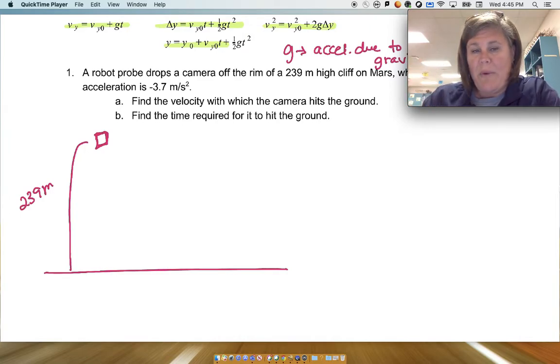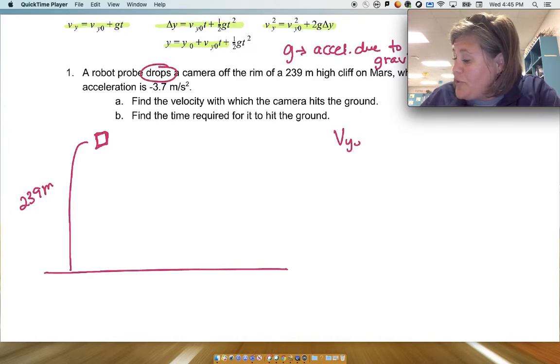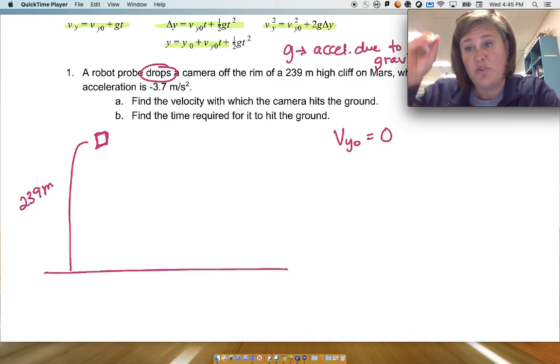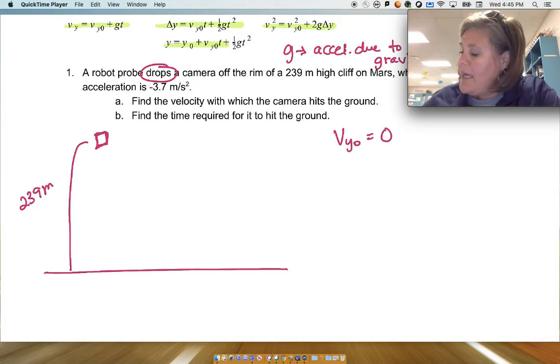So let's just write down what we know. First of all, this word drops means that the initial vertical velocity is zero, because the object's dropped. Initial velocity is zero. Now, we can do this one of two ways.